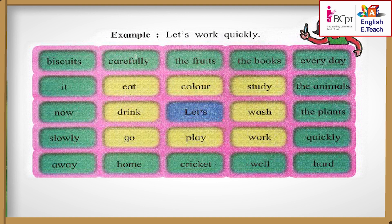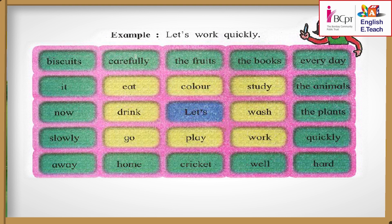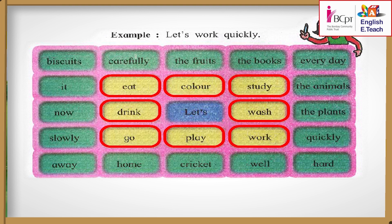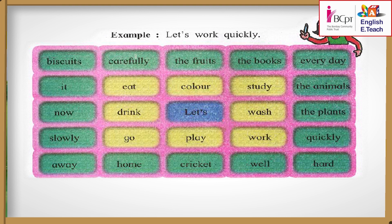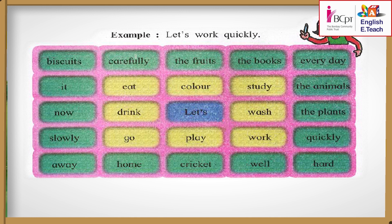Then choose a word from the yellow boxes, and complete the sentence with a word from one of the green boxes. Here's an example: Let's work quickly.